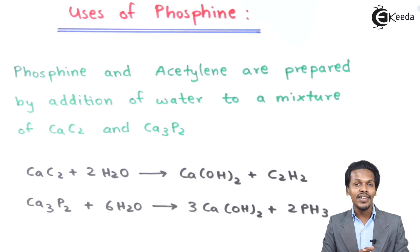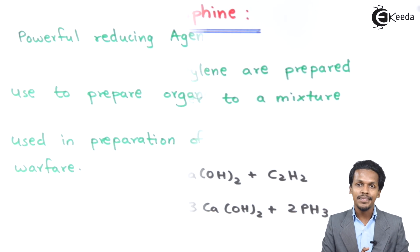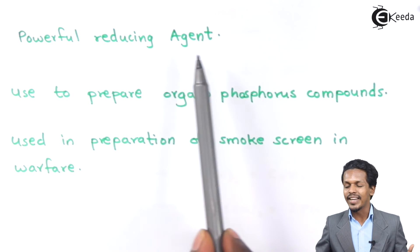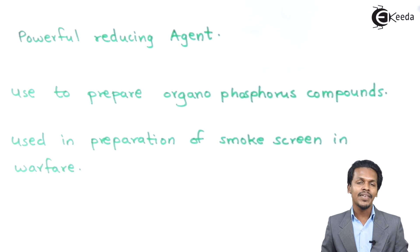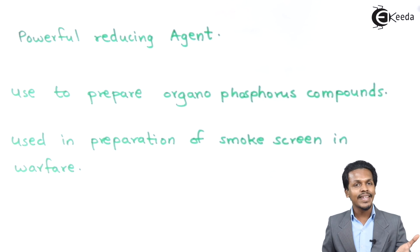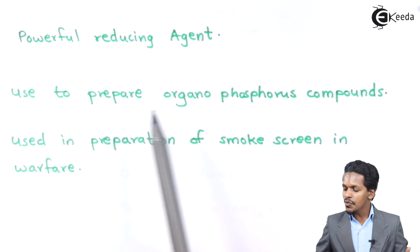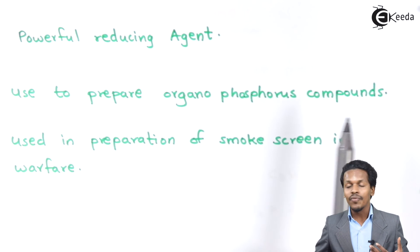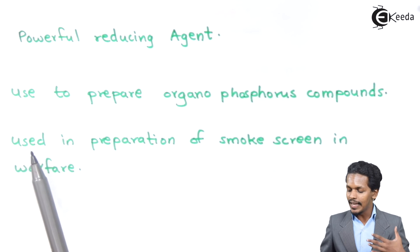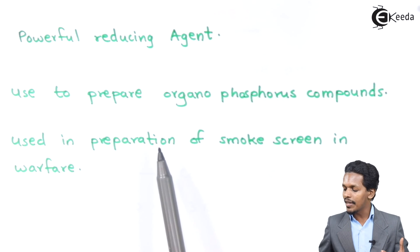The next use is that phosphine (PH₃) is used as a powerful reducing agent. Talking about the next point, it is also used to prepare organophosphorus compounds.